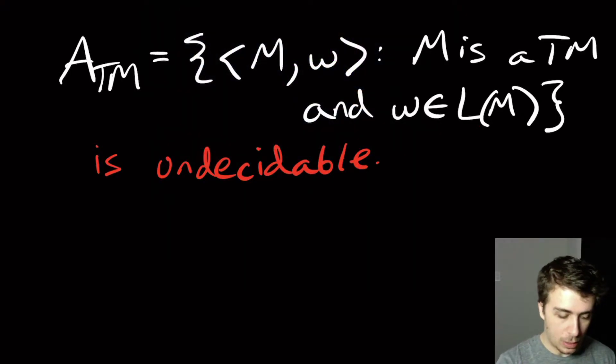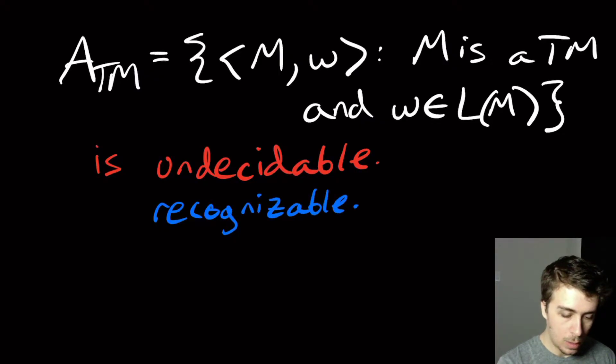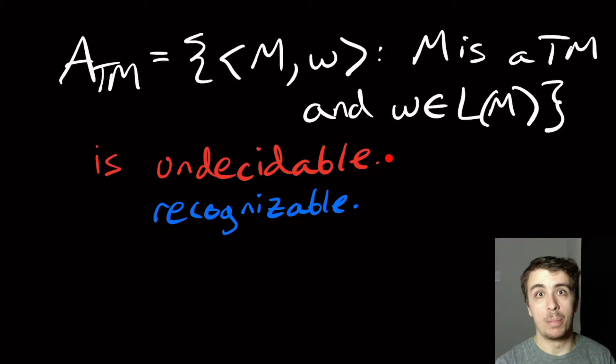But first thing that we're going to do is we're going to show that this is recognizable. So I claim that this is a recognizable but undecidable language. Recognizable means that for the inputs, the M and W that are in ATM, then I always halt. For the ones where it either doesn't encode a Turing machine or input W, or if the input is not accepted by the Turing machine, it does not matter. We could run forever on those if we needed to. But for the ones that are in here, I have to say yes and halt in a finite amount of time.